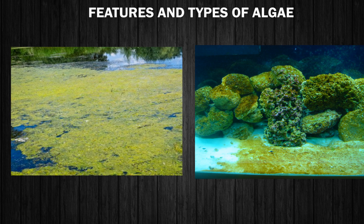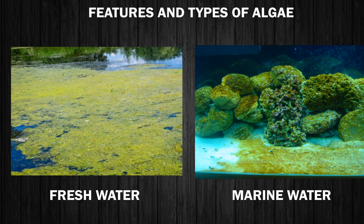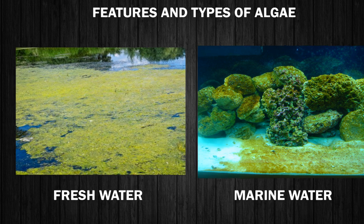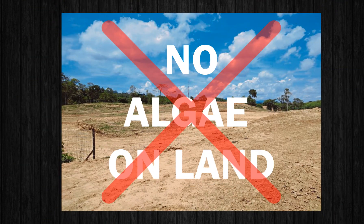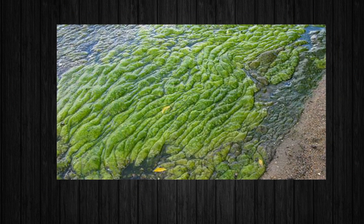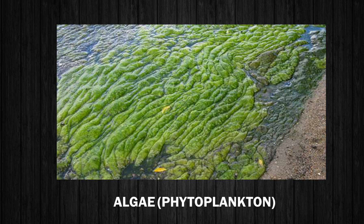Algae are primitive plants which are found in water habitats. They can be found both in fresh water as well as in marine water. Very few of these organisms can survive on land. You must have seen the pond water covered with grass-like plant — this green structure is nothing but algae. Algae which are found floating on water are called phytoplankton.